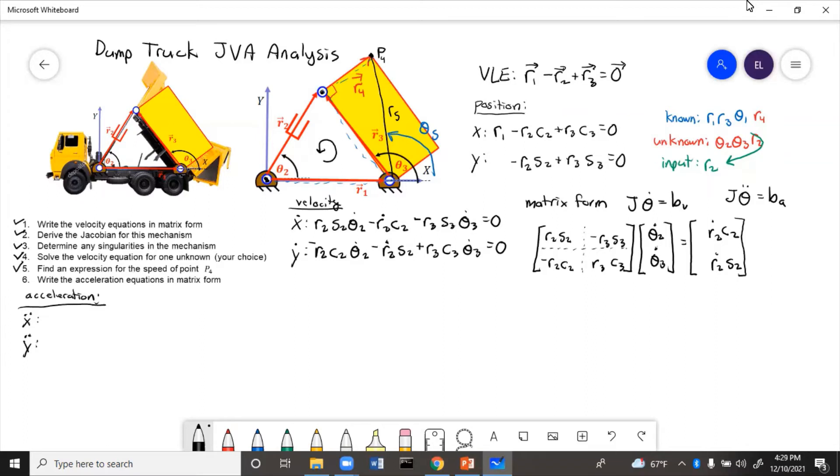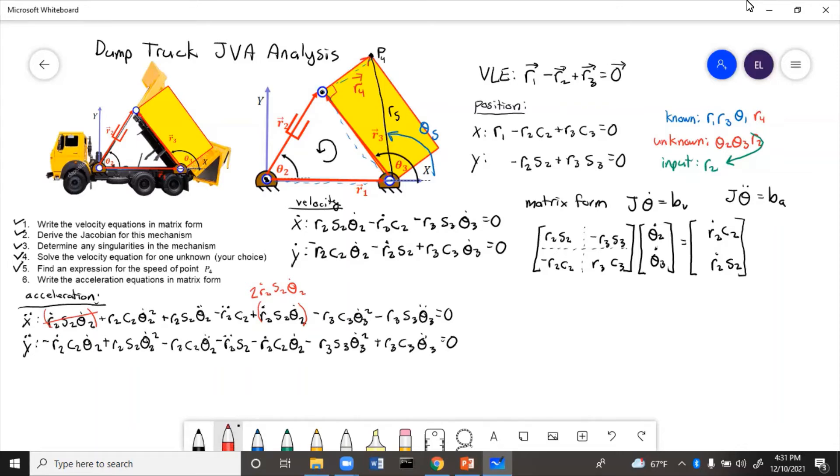Take the derivative of the x dot equation. Now we can see here that this r2 dot s2 theta dot 2 also appears here, r2 dot s2 theta dot 2. So this will just become two r2 dot s2 theta dot 2. We can cross out that one. Now similarly here, we have a negative r2 c2 theta dot 2 and a negative r2 c2 theta dot 2. So that will combine to be two.